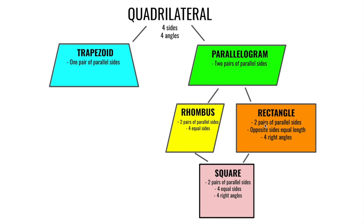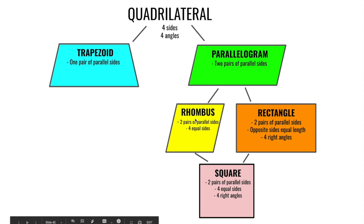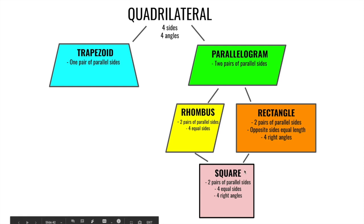If a shape has two pairs of parallel sides where opposite sides are the same length, and also has four right angles, we call it a rectangle. A square is the most special quadrilateral — it has two pairs of parallel sides like a parallelogram, four right angles like a rectangle, and four equal sides like a rhombus.